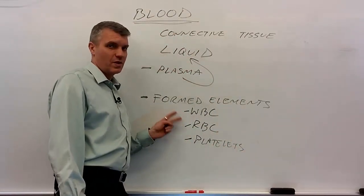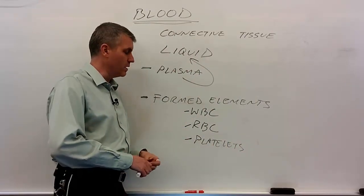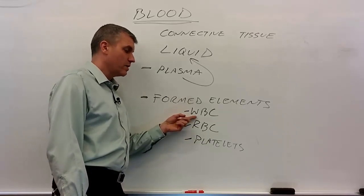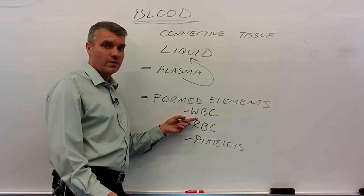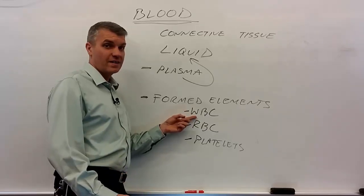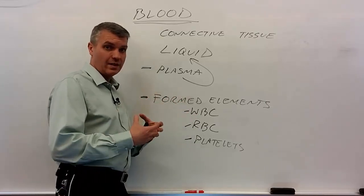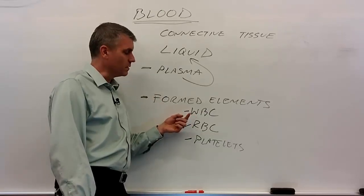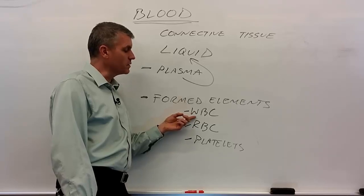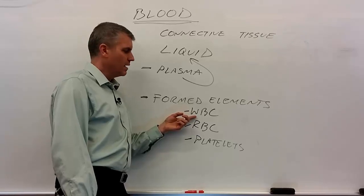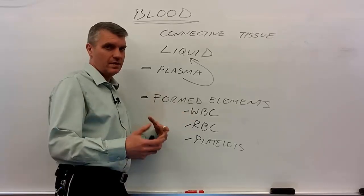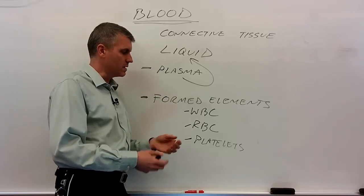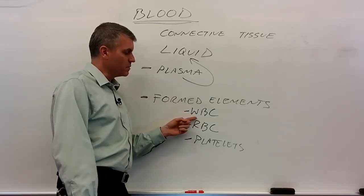Now a brief compare and contrast between these three formed elements in terms of their jobs. The white blood cell's job is body defense. There are different white blood cells: some are involved with true immunity — these are the lymphocytes. Some are highly phagocytic, engulfing and destroying foreign material — like macrophages and neutrophils. Others defend us from helminths and other parasites, which we call infestations. Overall the job is body defense.